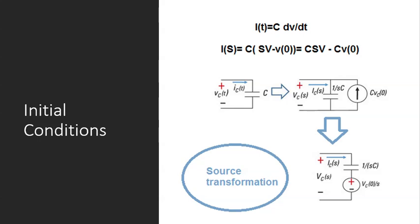When you turn on the power supply, capacitors and inductors can store some energy inside them. The capacitor stores the energy in the format of voltage, and the inductor stores the energy in the format of current. Keep it in mind this way — capacitors store energy as voltage and inductors store energy as current — because of a reason that you will see.